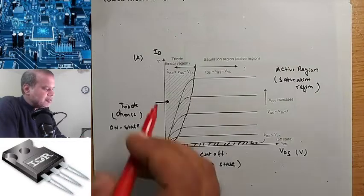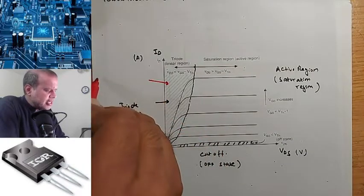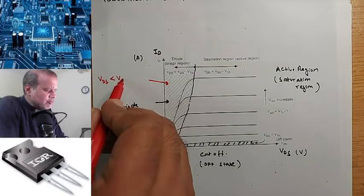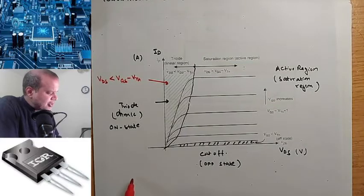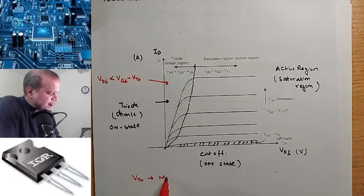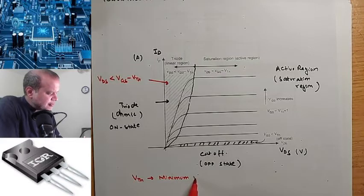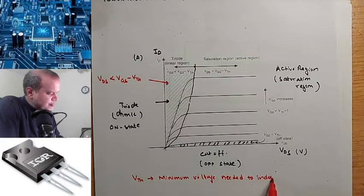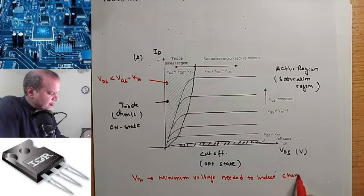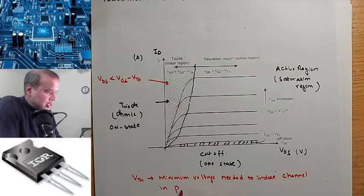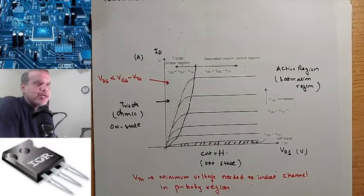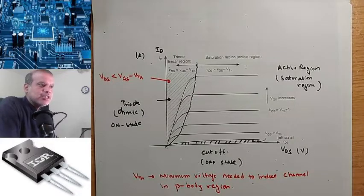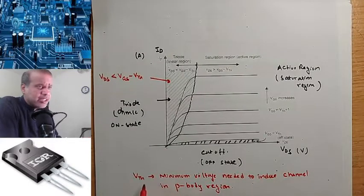First, the triode region: VDS is less than VGS minus threshold voltage. What is the threshold voltage? Threshold voltage is the minimum voltage needed to induce a channel in the P-body region. This is the minimum voltage required to introduce a channel in the P-body region.